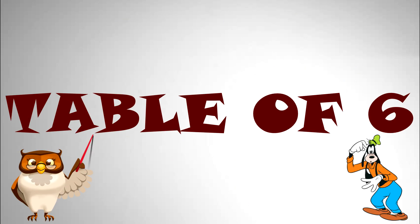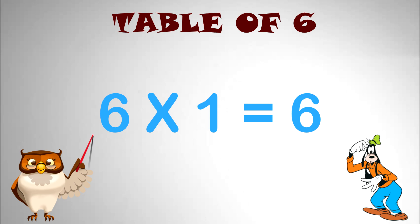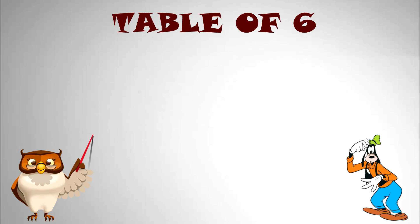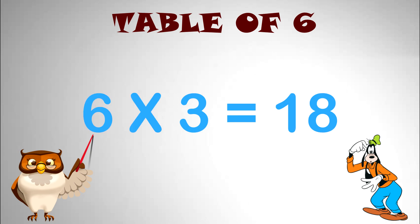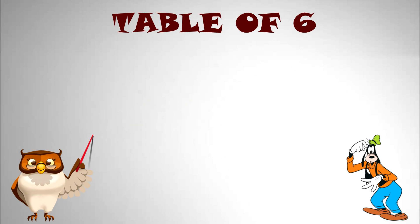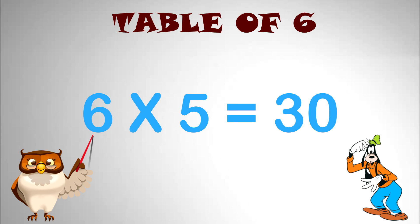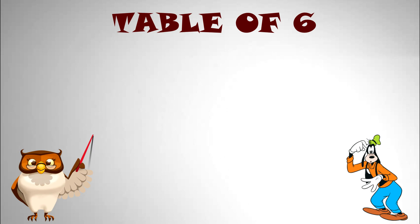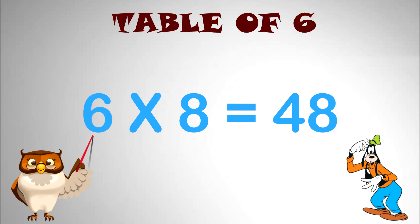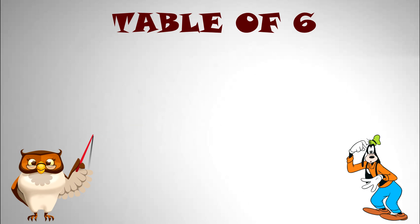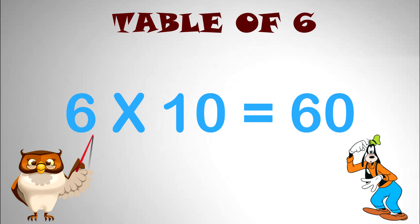Table of 6. 6 x 1 equal to 6. 6 x 2 equal to 12. 6 x 3 equal to 18. 6 x 4 equal to 24. 6 x 5 equal to 30. 6 x 6 equal to 36. 6 x 7 equal to 42. 6 x 8 equal to 48. 6 x 9 equal to 54. 6 x 10 equal to 60.